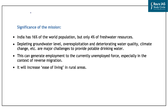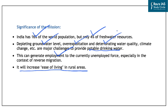The Jal Jeevan Mission was required because India has about 16% of the world's population but only 4% of its freshwater resources, and faces problems of depleting groundwater, overexploitation, deteriorating water quality, and climate change. Besides providing portable drinking water, the mission can help generate employment in rural India, which witnessed rural migration during COVID-19. It is also likely to increase the ease of living in rural areas. These points can be used in answers on developmental initiatives related to rural India in General Studies Paper 2.